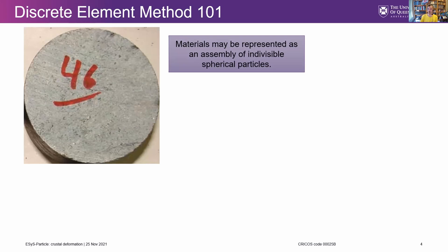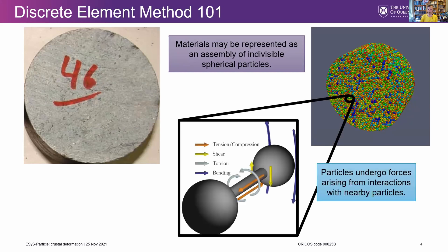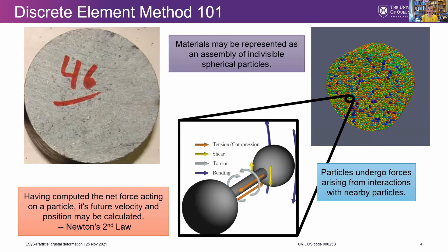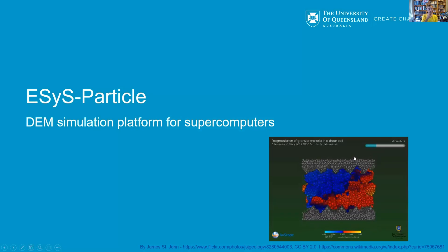The discrete element method is relatively old, from the late 1980s. The idea is that we represent materials like a piece of rock as a whole bunch of little indivisible spheres. We define forces between those spheres and then apply Newton's laws brute force to determine how those spheres will move around for different loading conditions, different initial geometries, and different rheologies incorporated into the interactions between these individual spheres. It's computationally very expensive.